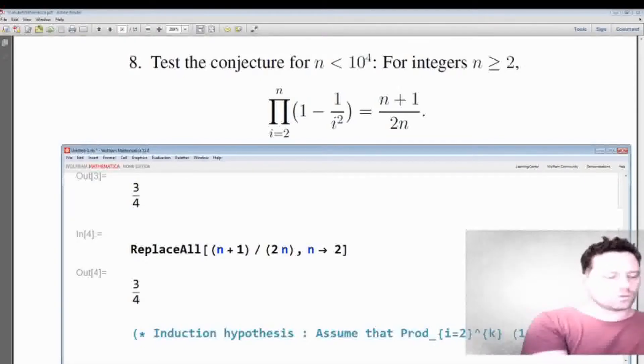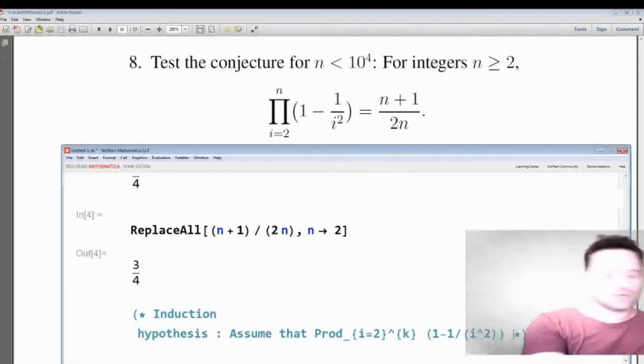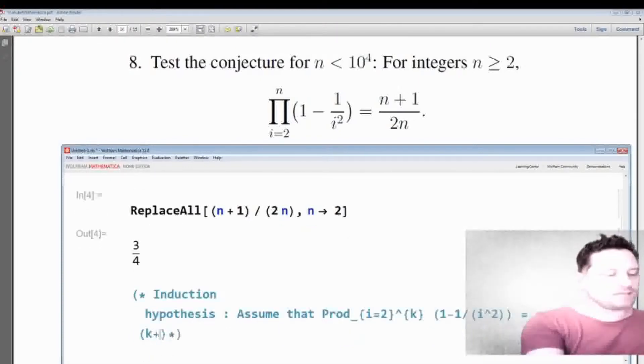1 minus 1 over i squared, we're assuming that this is equal to k plus 1 divided by 2k. All right, so this is our induction hypothesis.